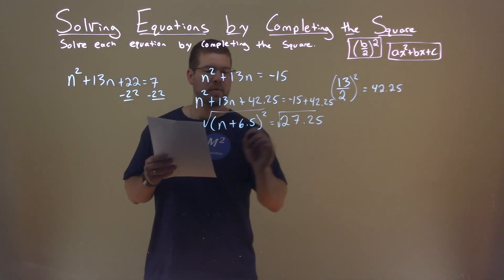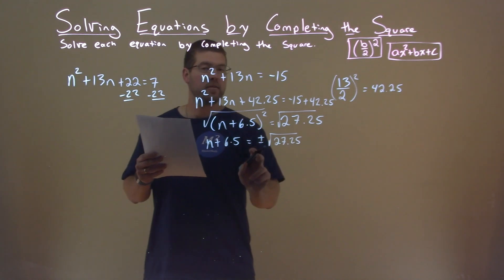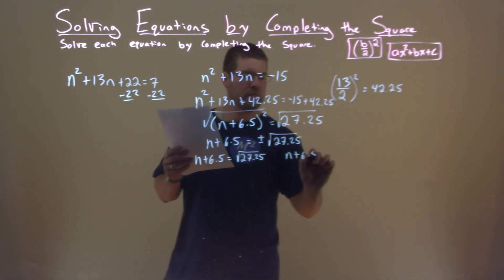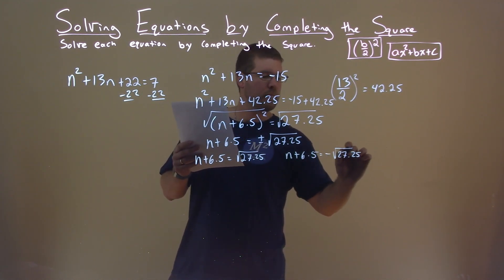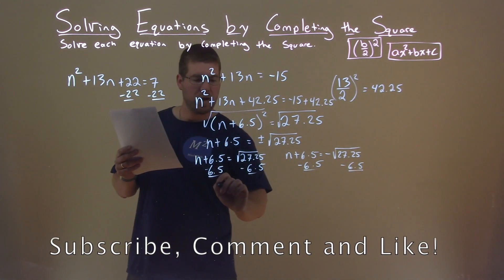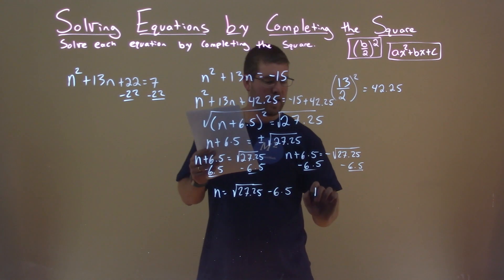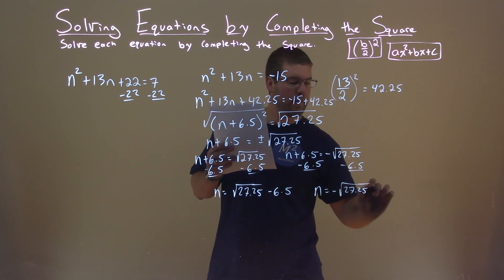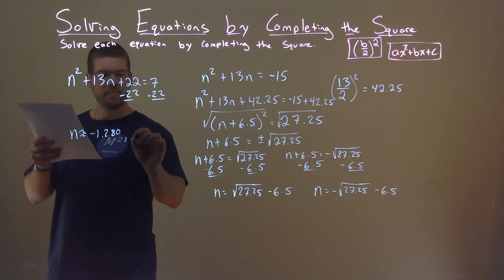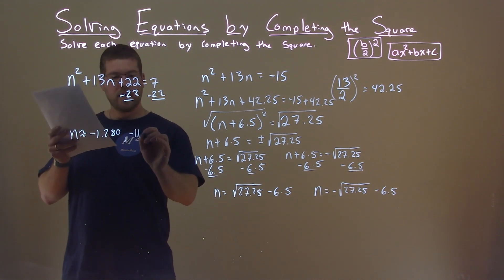Taking the square root of both sides: n plus 6.5 equals plus or minus the square root of 27.25. Since it's plus or minus, we can separate into two equations: n plus 6.5 equals positive square root of 27.25, and n plus 6.5 equals negative square root of 27.25. Subtracting 6.5 from both sides: n equals square root of 27.25 minus 6.5, and n equals negative square root of 27.25 minus 6.5. Those two decimals are approximately negative 1.280 and negative 11.720. Those are our final answer.